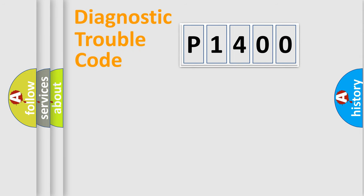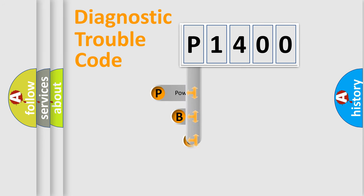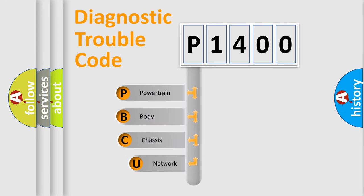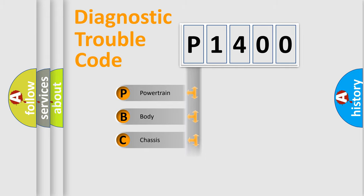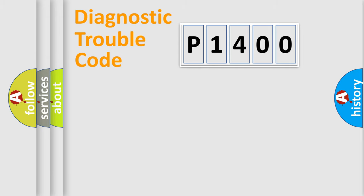First, let's look at the history of diagnostic fault code composition according to the OBD2 protocol, which is unified for all automakers since 2000. We divide the electric system of an automobile into four basic units: Powertrain, Body, Chassis, and Network.